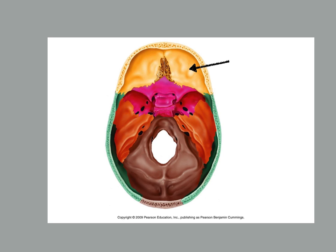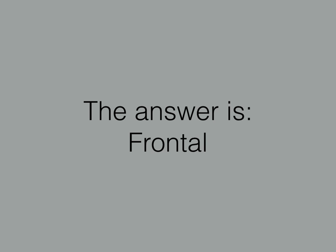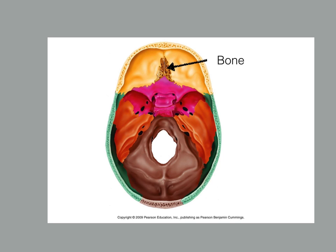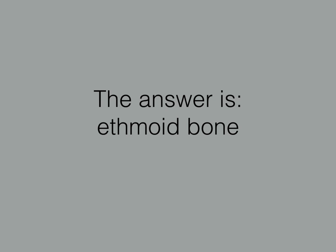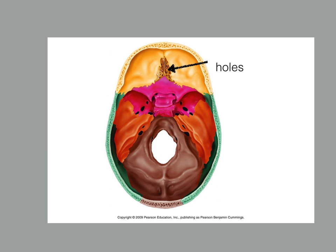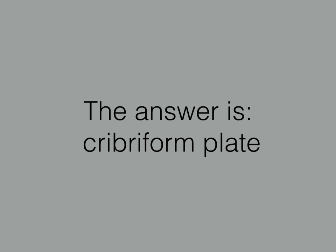Just the name of the bone here. That is the frontal bone. Name for the bone in the middle there. That's the ethmoid bone. Name for the area containing the holes there. That's the cribriform plate.